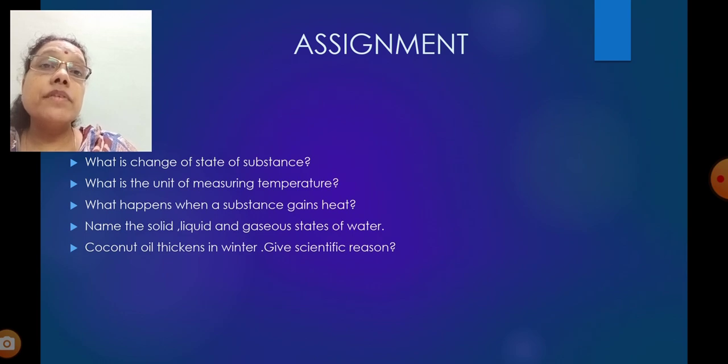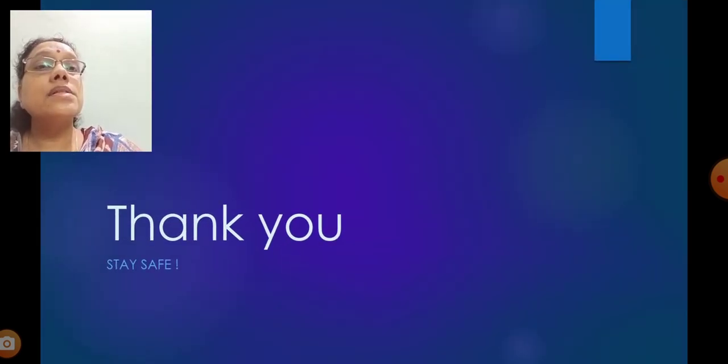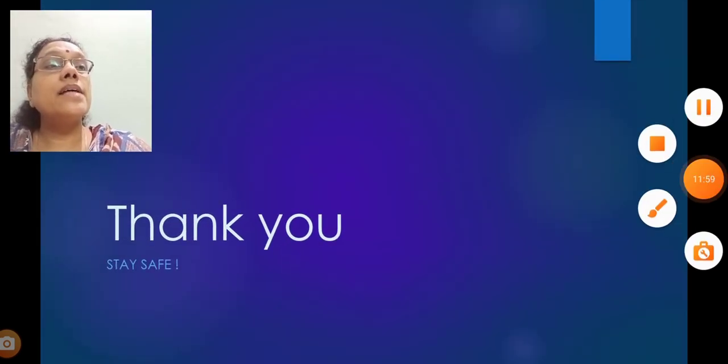Coconut oil thickens in winter, give scientific reason. Winter, the temperature will be very low. You know that during very cold time, you are wearing sweaters and coming. At that time, coconut oil is normally in liquid state. It starts condensing. So that is the answer to this. You have to write the answers in your science notebook. That is about today's session. Thank you. Stay safe. Have a nice day.